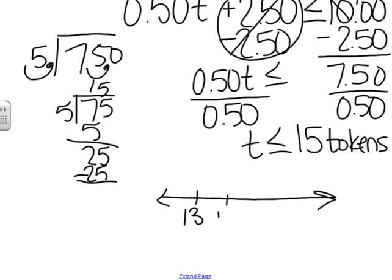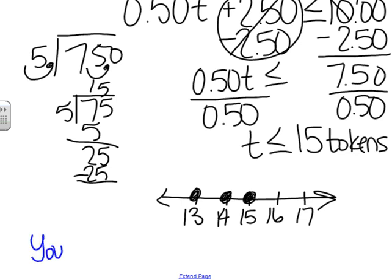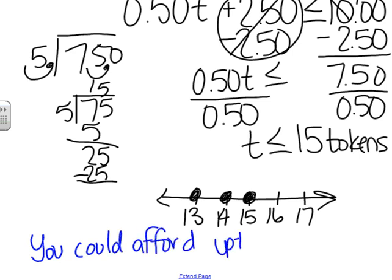This graph would be discrete because you could not buy part of a token — you either buy it or you don't. So we're going to use separate circles instead of a ray: you could buy 15, 14, 13, 12, 11, 10, 9, 8, 7, 6, 5, 4, 3, 2, 1, or even 0. Those are all the possible solutions. To interpret: you could afford up to 15 tokens.